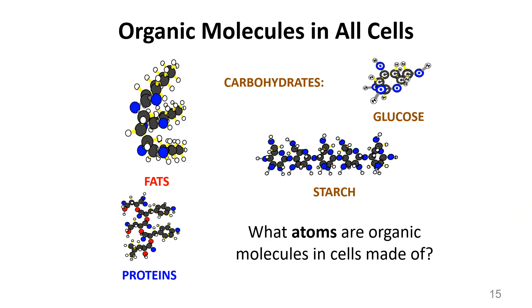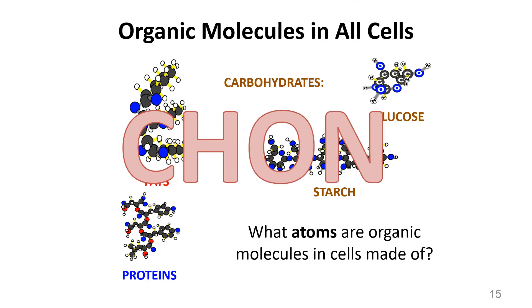To sum it up, what kind of molecules can you find in cells? You're going to find organic molecules: carbohydrates, fats, and proteins. Cells are made of organic molecules. And what atoms are these organic molecules made out of? Carbon, hydrogen, oxygen, and nitrogen. CHAN is an acronym scientists use to remember the main elements of life — the four most common types of atoms found in living systems.